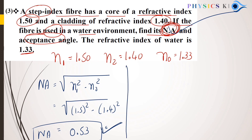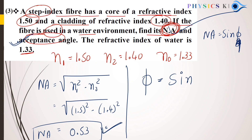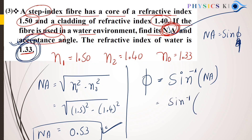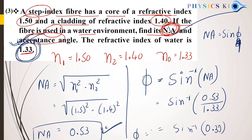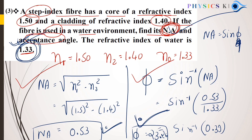Now for the acceptance angle: NA = sin(φ), where φ is the acceptance angle. Since the fiber is in water (n0 = 1.33), we write φ = sin⁻¹(NA / n0) = sin⁻¹(0.53 / 1.33) = sin⁻¹(0.39) ≈ 23.26°. This is the acceptance angle. Only two formulas are needed: NA and acceptance angle.